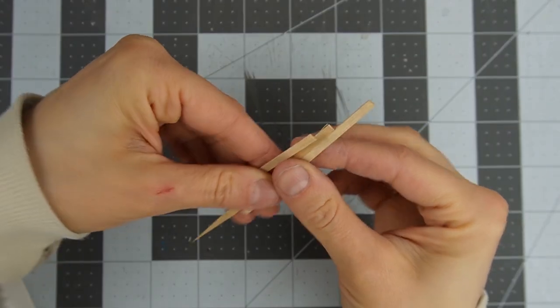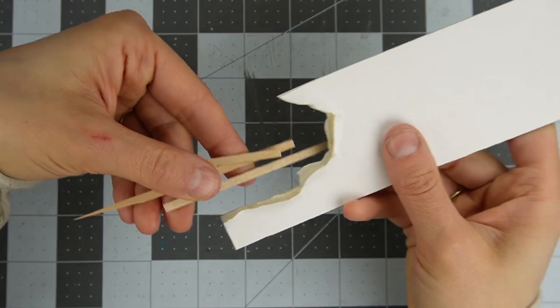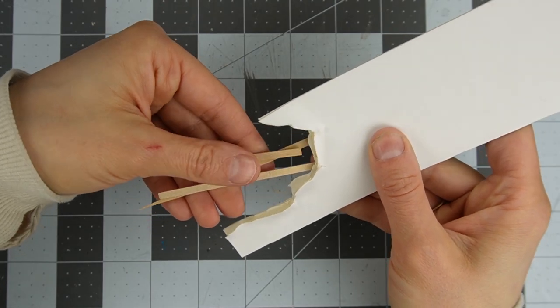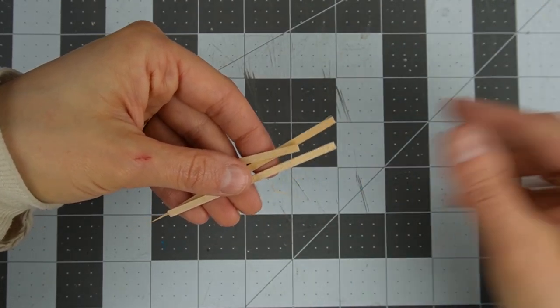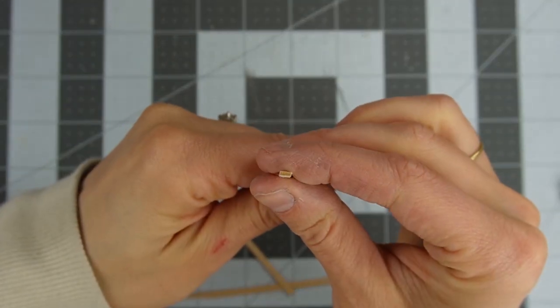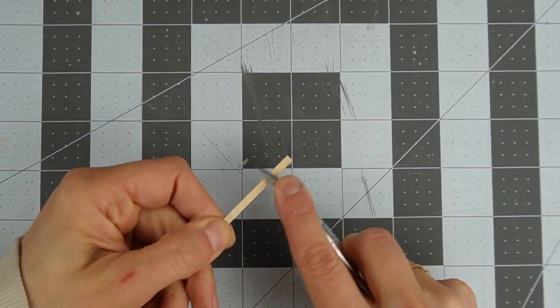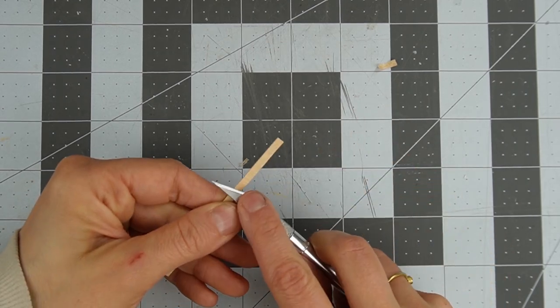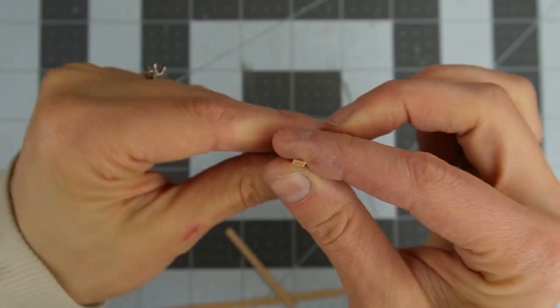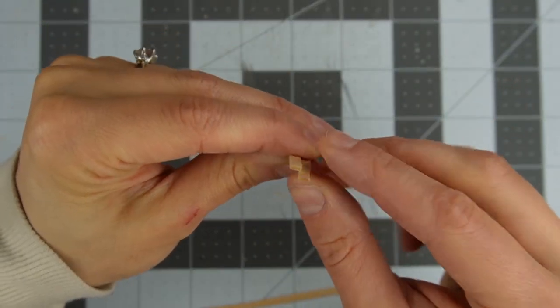To make the ceiling look like lath and plaster, I'll be gluing some coffee stirrer sticks to the underside. Coffee stirrer sticks are pretty small, but they're actually a bit too thick and out of scale, so I'm using my exacto knife to shave them so they're thinner. Here's the original coffee stirrer stick compared to the thinner version.